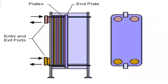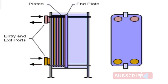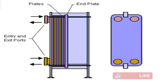Plate and frame heat exchangers consist of two rectangular end members which hold together a number of embossed rectangular plates with holes on the corners for the fluids to pass through. Each of the plates is separated by a gasket which seals the plates and arranges the flow of fluids between the plates. This type of exchanger is widely used in the food industry because it can easily be taken apart to clean.